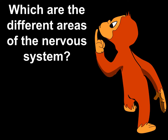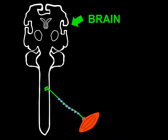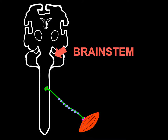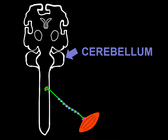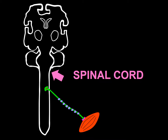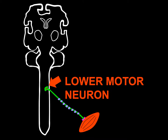I encourage you to memorize this division because during this talk we will use these areas as the major anatomical sites for localization. Any neurological functional system may be affected at the level of the brain — where we can distinguish the cortex, the centrum semi-ovale, and the internal capsule. A neurological functional system may also be involved at the level of the brain stem, where we distinguish the midbrain, the pons, and the medulla. It may also be involved at the level of the cerebellum, the spinal cord, or the lower motor neuron.